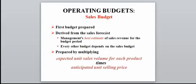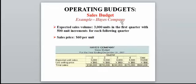The sales budget itself is easy to put together — it's simply the expected unit sales volume for each product times the selling price. For example: expected unit sales in quarter one are 3,000 units at a selling price of $60, giving $180,000. This is followed by quarter two, quarter three, and quarter four. This is a straightforward budget and will not be on the exam.